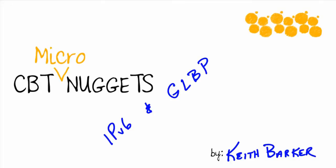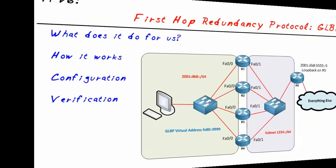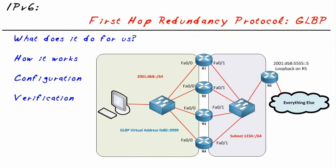IP version 6 and the Gateway Load Balancing Protocol. Our objective for this micronugget is to take a look at the world of Gateway Load Balancing Protocol: to understand what it does for us, how it does it, how to configure it, and how to verify it.